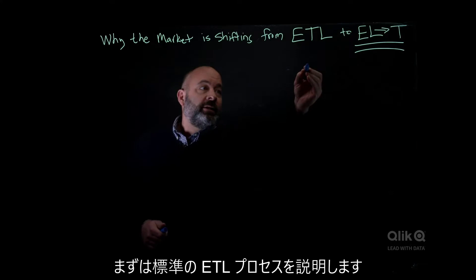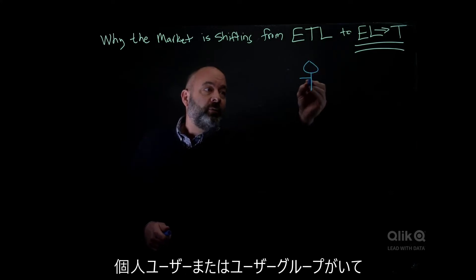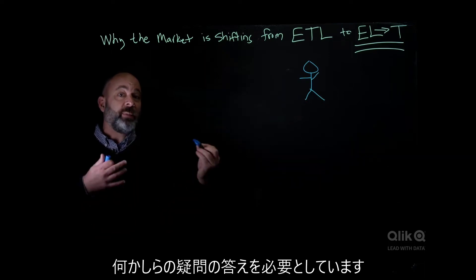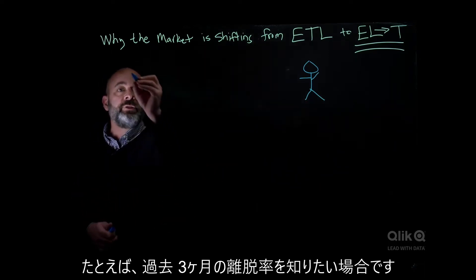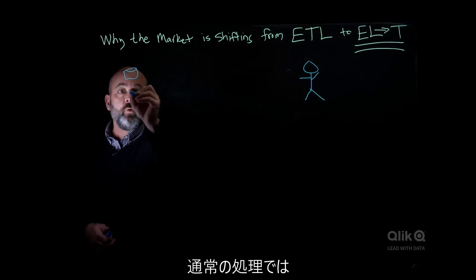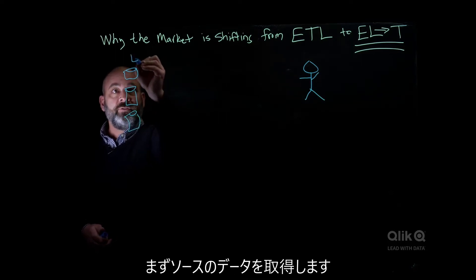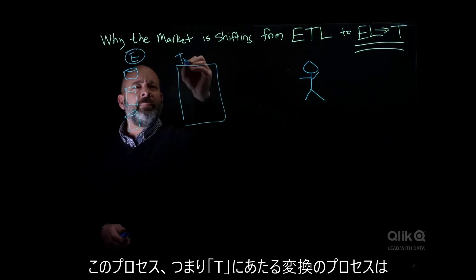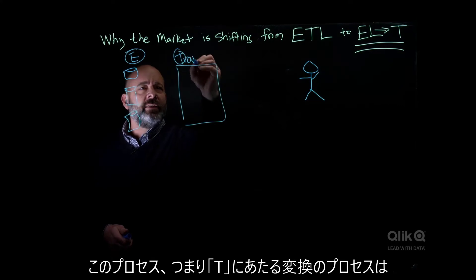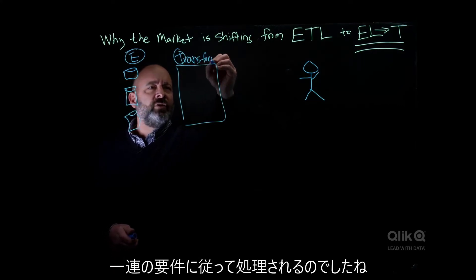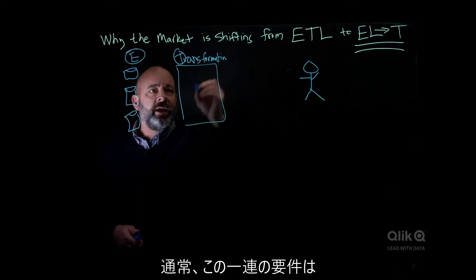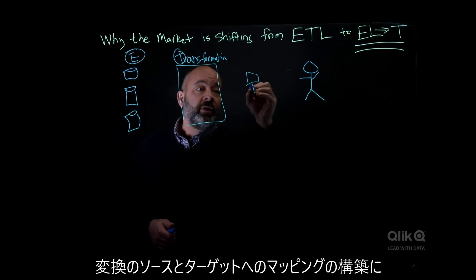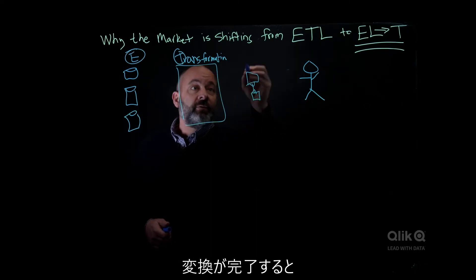Let's start with the typical ETL process where you have a consumer or a set of consumers that need a question answered, such as what does my attrition look like over the last three months? Typically what they're doing is grabbing source data, extracting that source data into a process of transformation. This process of transformation is driven from a set of requirements, and that set of requirements typically takes a long time to build these transformation source-to-target mappings.